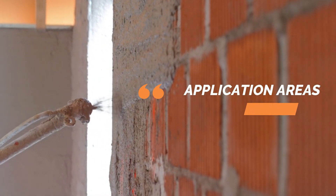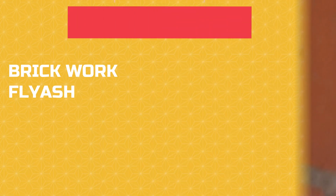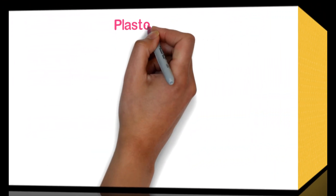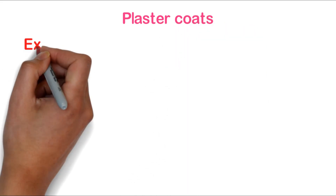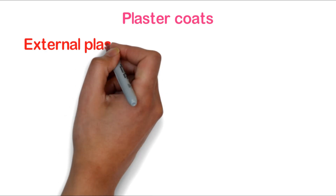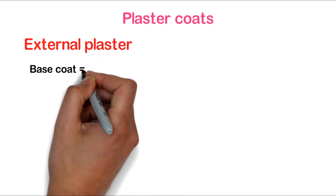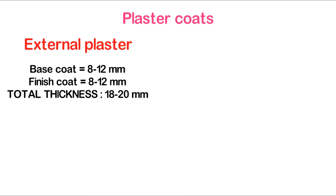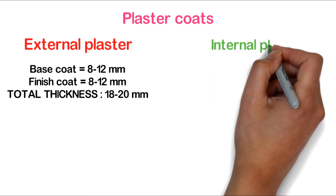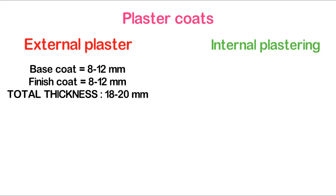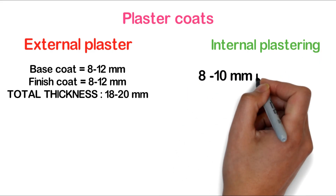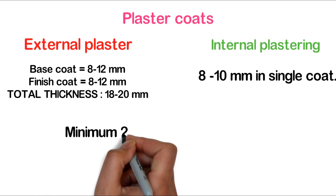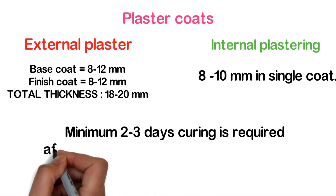Application areas of ready mix plaster — they can be applied on brickwork, fly ash bricks, AAC blocks, concrete surfaces, CLC blocks and many more. For external plastering, normally two coats are required: a base coat of 8 to 12 mm and a finished coat of 8 to 12 mm, with total thickness of 18 to 20 mm. For internal plaster, there is only one coat with thickness of 8 to 10 mm. Minimum 2 to 3 days curing is required after the base coat before application of the final coat.